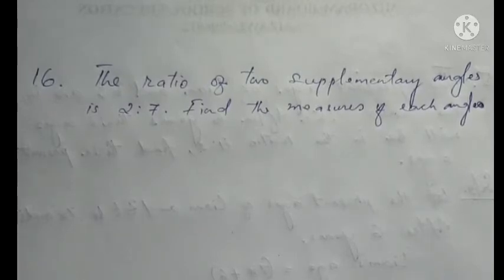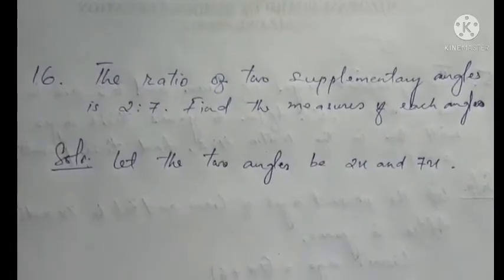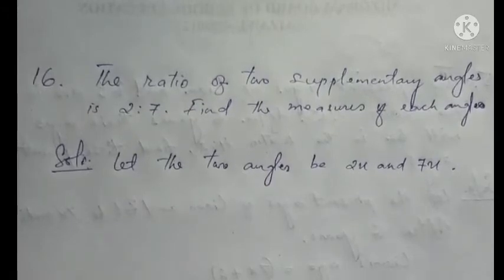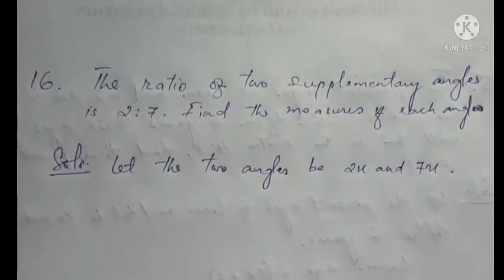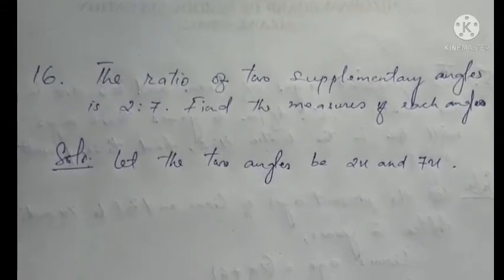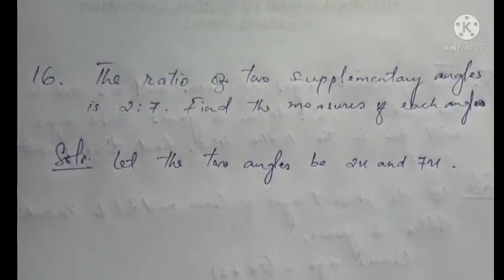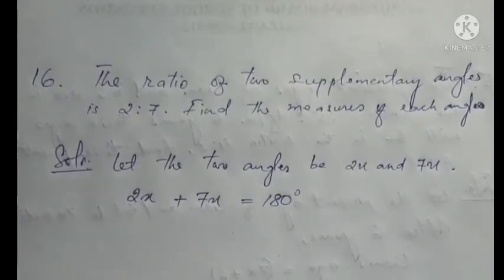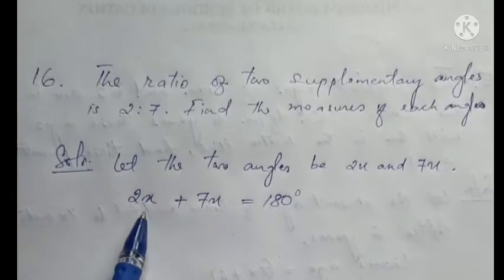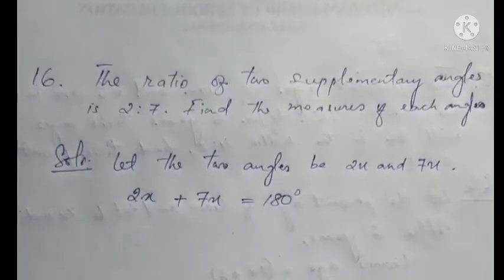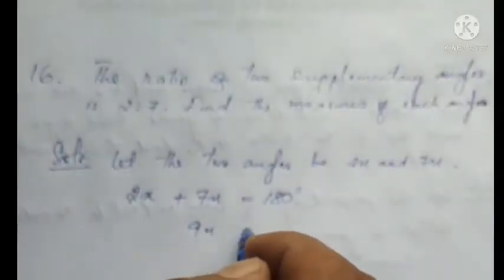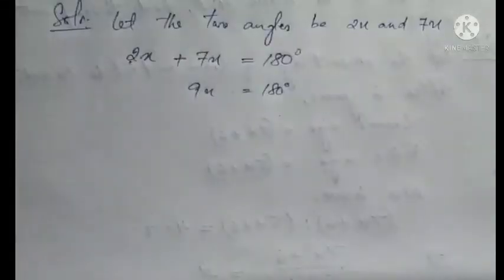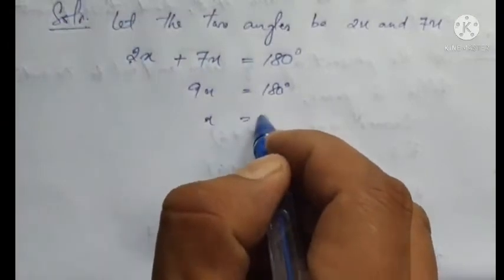The two angles are in the ratio 2 is to 7. Let the two angles be 2x and 7x. Since they are supplementary, 2x plus 7x equals 180 degrees. Supplementary angles sum to 180 degrees, not 90 like complementary angles.